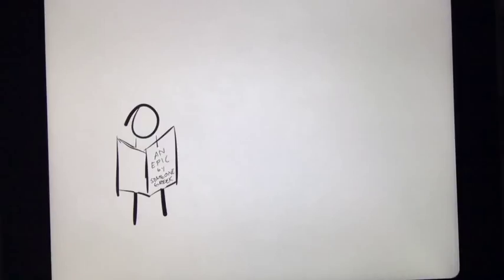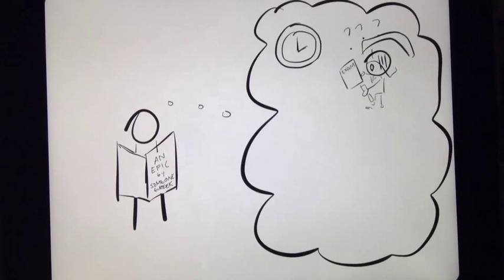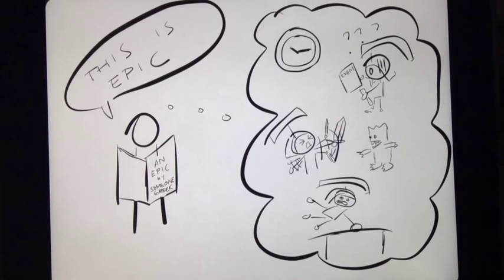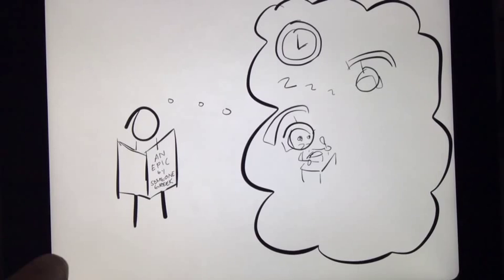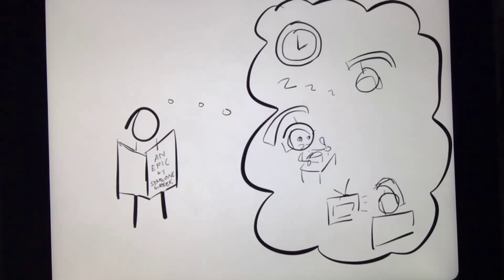For example, as Bakhtin studied, time in Greek romances or epics is expressed by the tests, trials, or obstacles the hero encounters and overcomes. In this way, a Greek epic cannot develop if the hero does nothing heroic, and this defines the epic.